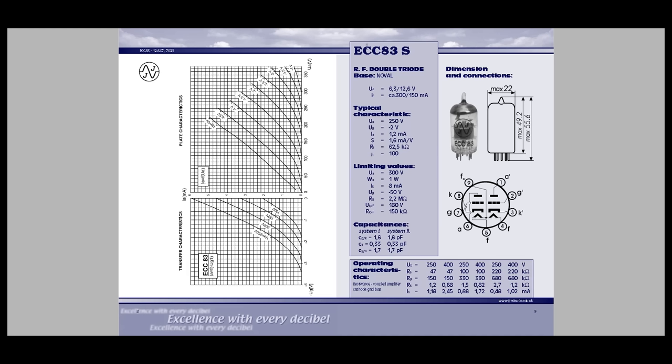Over here we've got the ECC83, which is also the same thing as the 12AX7, which is another one I showed. The limiting values here again for the cathode is 180 volts, and we were up to again 500, so that cooked it pretty well. The most important thing to note on this is again, this is the filament here, as I mentioned, four, five, and nine.